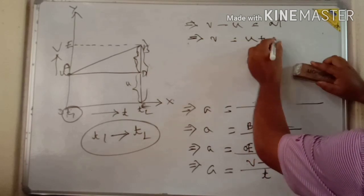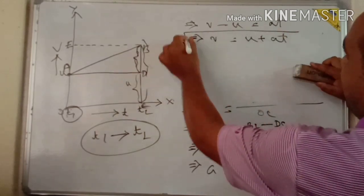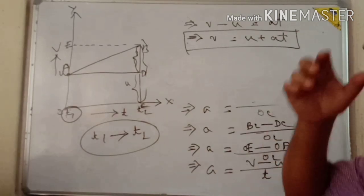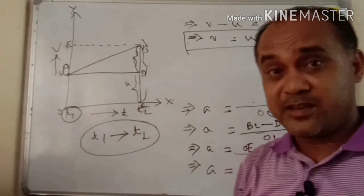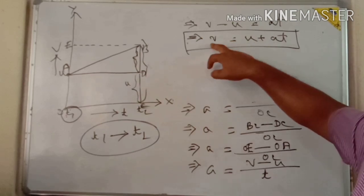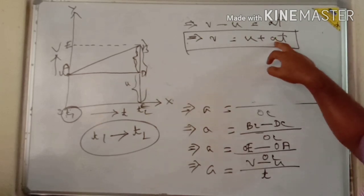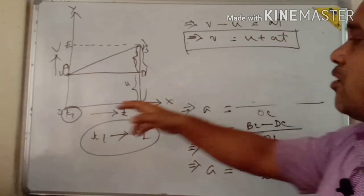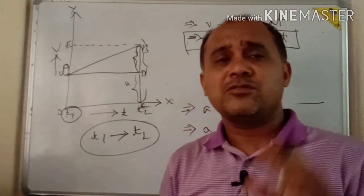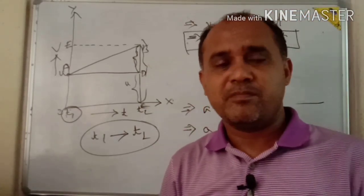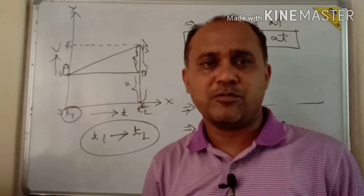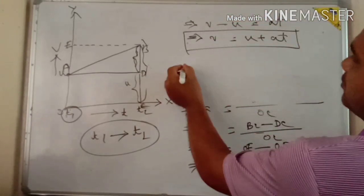v equal to u plus at. So ultimately, P equal to u plus at. P2 is the final value, a2 is the acceleration, T2 is the time interval.